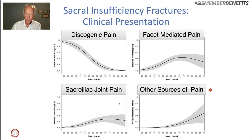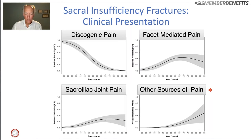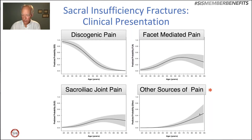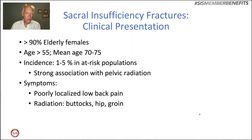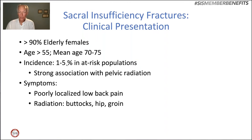When we talk about the clinical presentation of sacral insufficiency fractures, we can refer to the work of Michael De Palma at Virginia Commonwealth. Discogenic pain occurs in younger patients, while sacroiliac joint-mediated pain peaks at about age 70. Other sources of pain become more prevalent after age 70, and many of those other sources are sinister in nature, such as malignancy. We're going to see sacral insufficiency fractures predominantly in elderly females — 90% of them — generally greater than 55, with a mean age of 70 to 75. The incidence is about 1 to 5% in at-risk populations, with a strong association with pelvic radiation. Symptoms are poorly localized low back pain with radiation to the buttocks, hip, and groin.